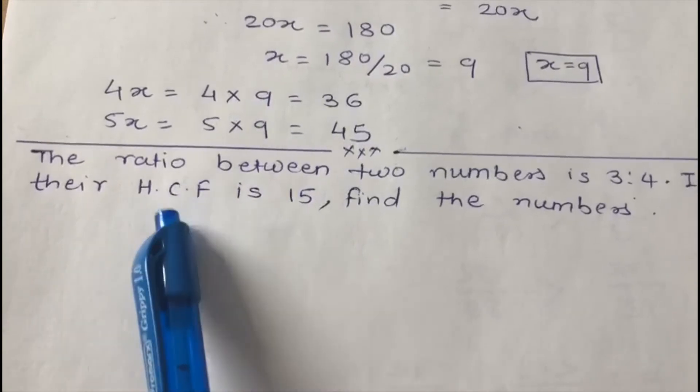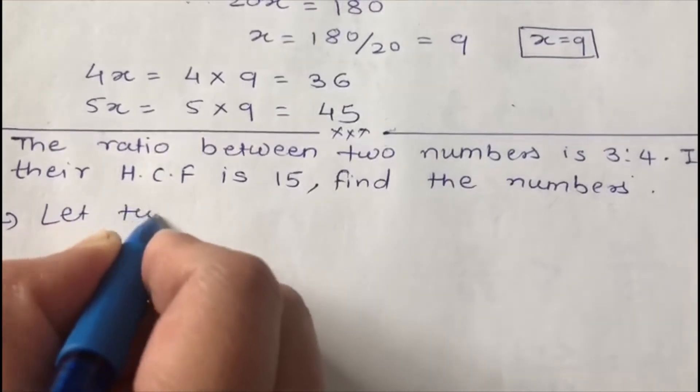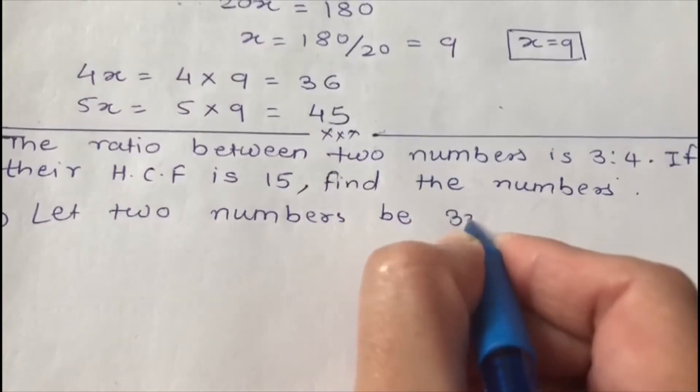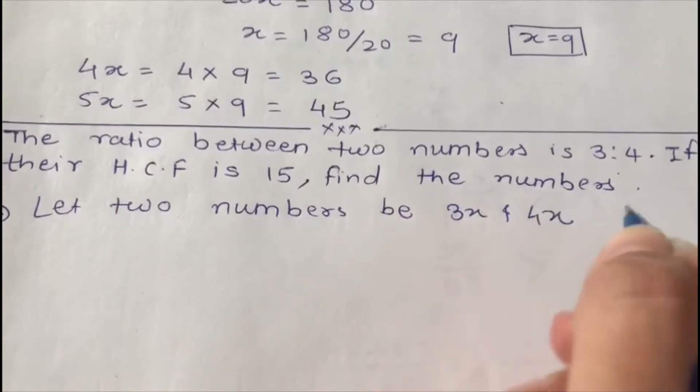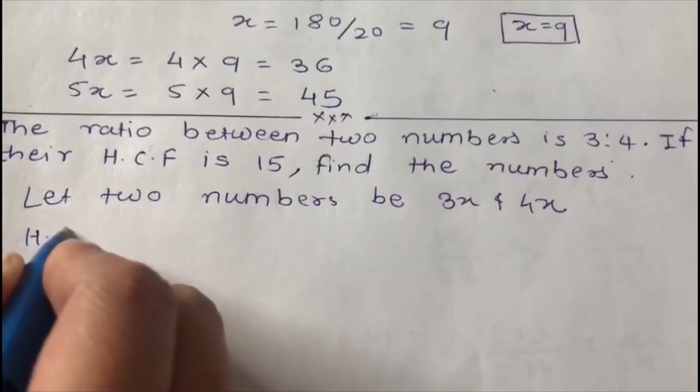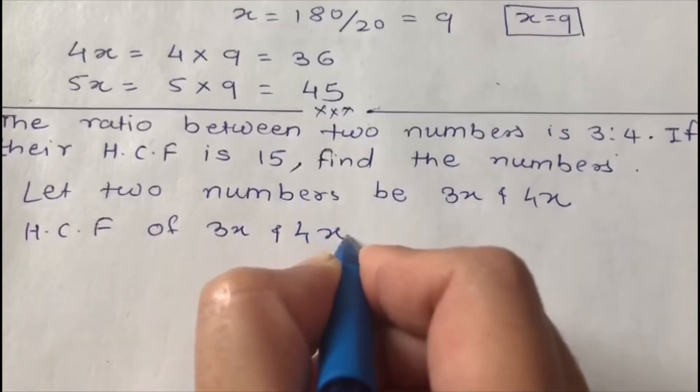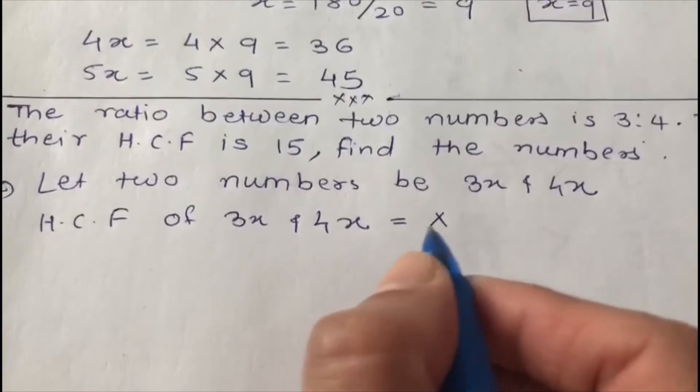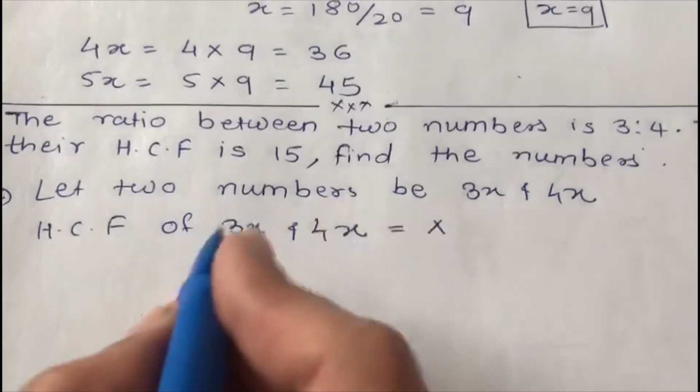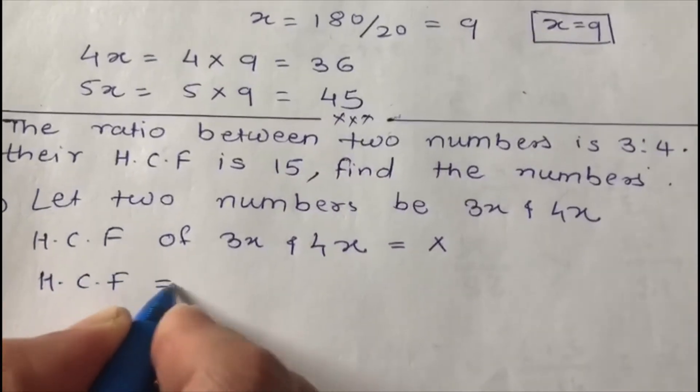So HCF means highest common factor. Let these two numbers be 3x and 4x, because the ratio is given 3 is to 4. And the HCF of this 3x and 4x is x, because the largest number common to 3x and 4x is x. That's why, and HCF is given, HCF is given as 15.